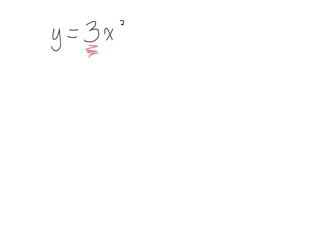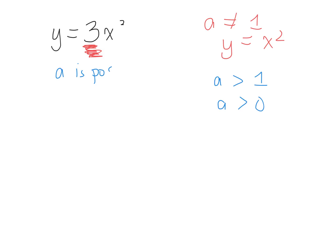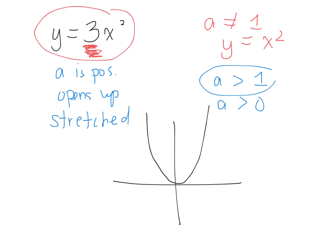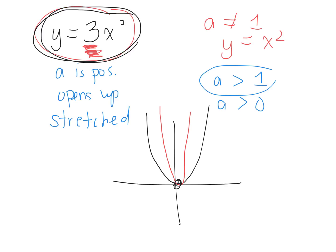Now we'll look at what happens when A is not equal to 1. As an example, consider y equals 3x squared. If A is greater than 1, the graph still opens up because A is positive, but it is vertically stretched — meaning it will be skinnier than the parent function. Both graphs still pass through the origin. Graph this equation and write down the coordinates to examine what happens to each one.